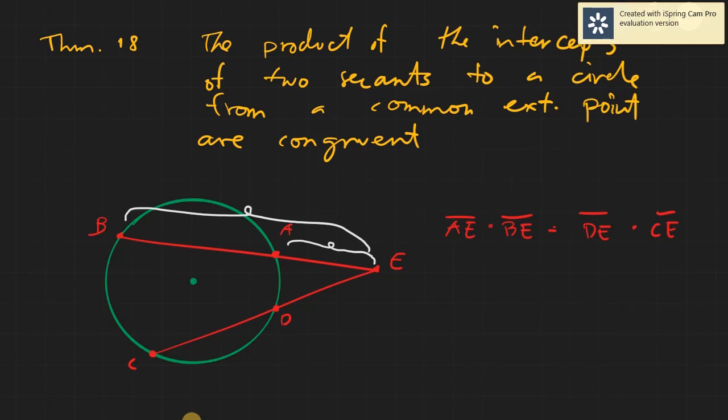So if you multiply BE times AE, again, you multiply the entire secant times the segment that is outside the circle. And this entire secant, this CE multiplied by the external part of it, the external segment of it outside the circle. So it is said here that they are congruent, meaning they should be equal if you try to multiply them.